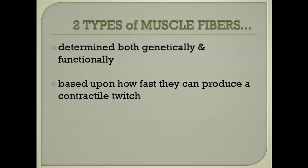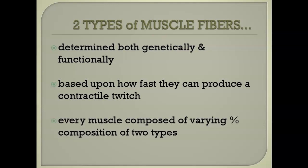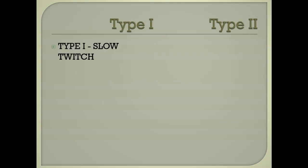Every muscle in your body is composed of both type 1 and type 2. Genetically your muscles are built this way, but your actions — how you treat your muscles — can get these different isoforms to be expressed. You can trigger the DNA to express certain types. We base them on how quickly they can produce that twitch. Remember, earlier it was 97 milliseconds — that's kind of the baseline. Type 1 is a slow twitch, and type 2 is a fast twitch.